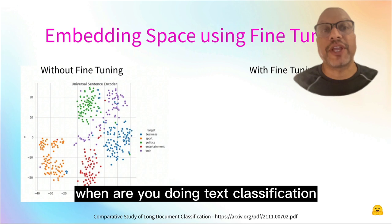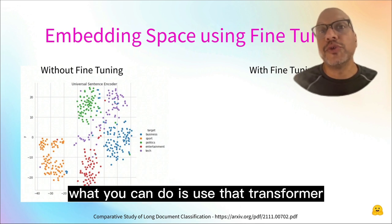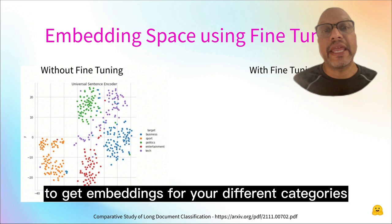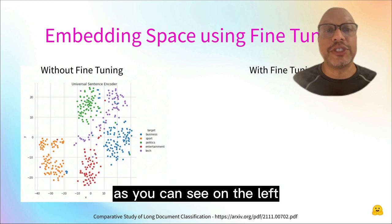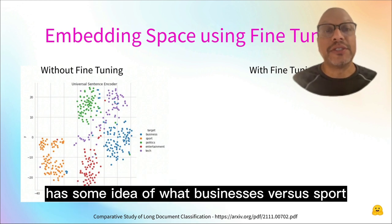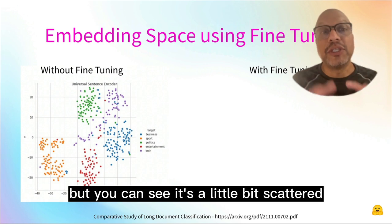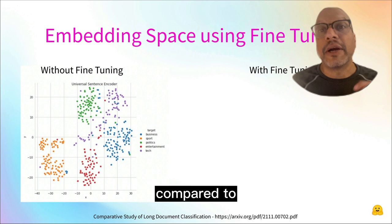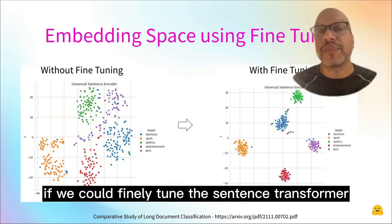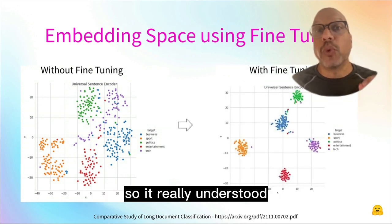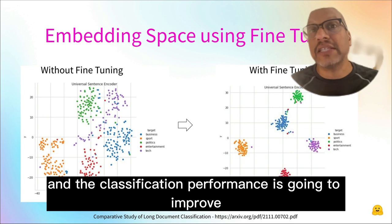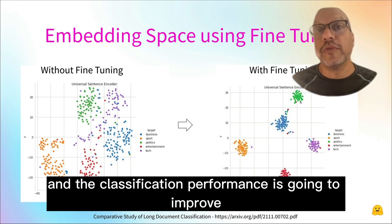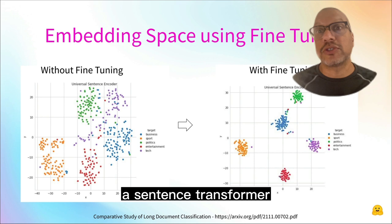When you're doing text classification with a sentence transformer, what you can do is use that transformer to get embeddings for your different categories. The pre-trained model itself, as you can see on the left, has some idea of what business is versus sport versus politics. But it's a little bit scattered compared to if you could fine-tune this sentence transformer so it really understood these classes. Now you can see these clusters are much tighter, and the classification performance is going to improve. This is why we want to fine-tune a sentence transformer.